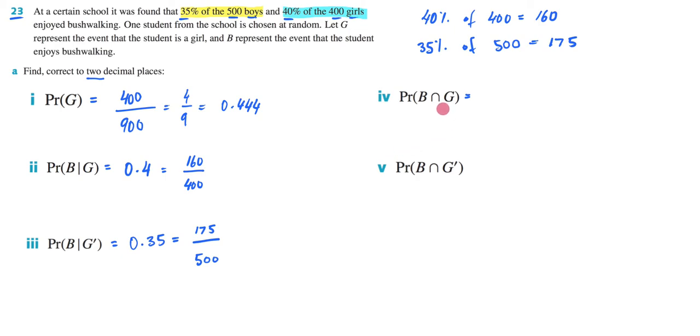So what I want you to picture is that you have the entire school in front of you, all 900 students, and we're asking you, what's the probability of you choosing someone who is a girl and who enjoys bushwalking? Notice that we're not saying who enjoys bushwalking out of the girls. That was the given. We're doing this time, you've got the whole school in front of you, and you're asking, what's the probability that we're going to select someone who enjoys bushwalking and is a girl?